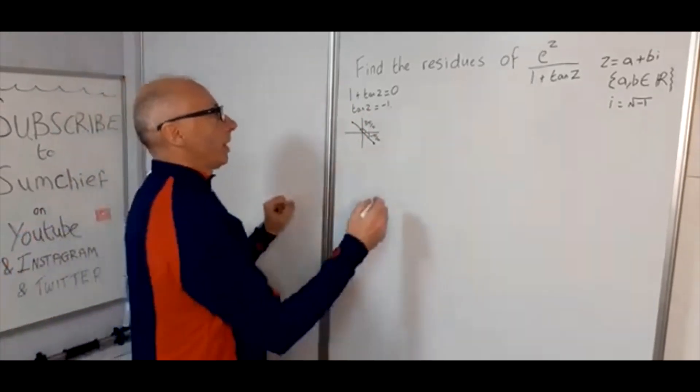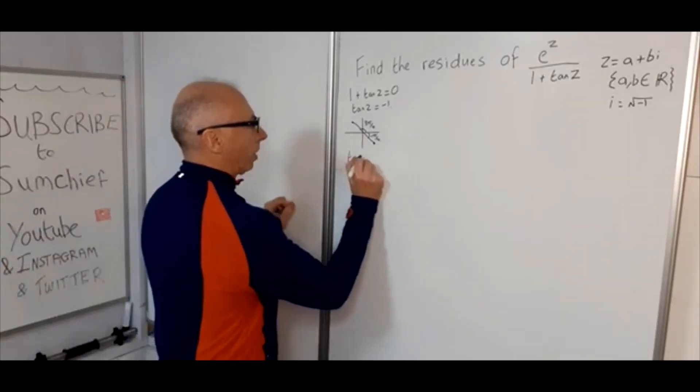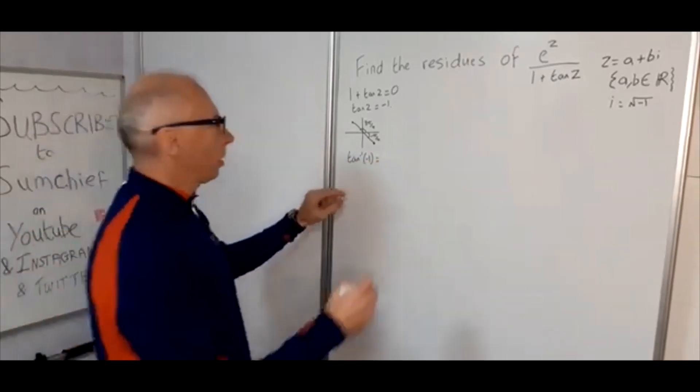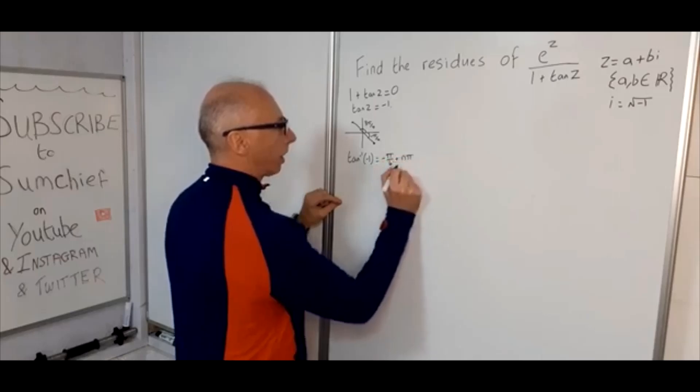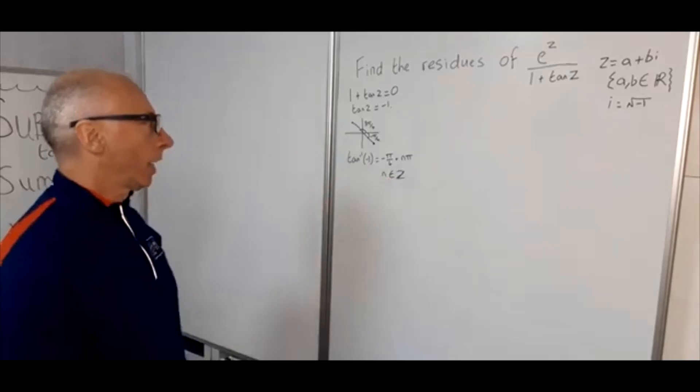So therefore, the inverse tangent of minus 1 for z equals minus π over 4 plus nπ, where n is any integer, positive or negative.